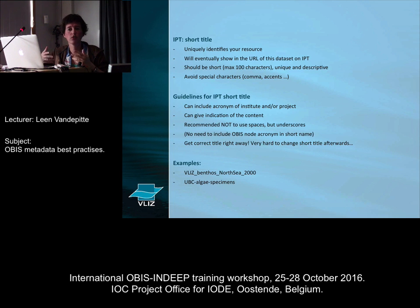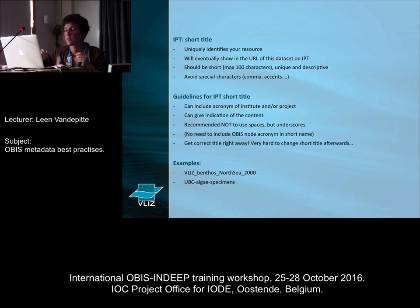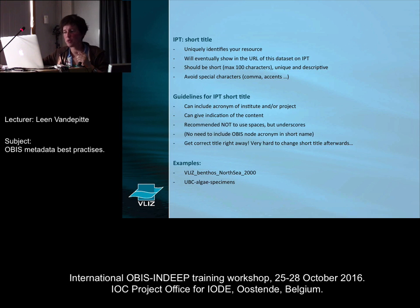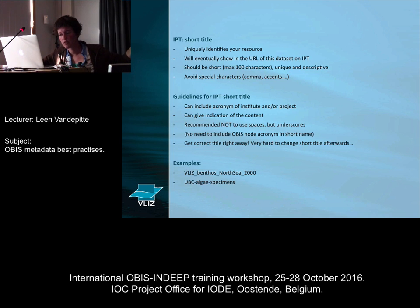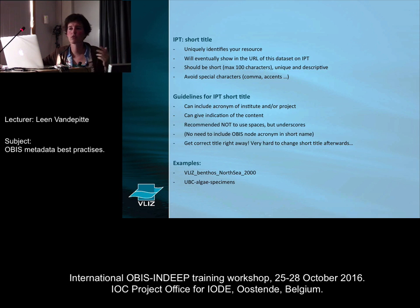If we turn that into some guidelines for the short title: if it's an acronym of an institute or project, you can include that. You can give very brief indications of the content — if it's about meiofauna, benthos, or plankton, use those words. Database-wise, it's recommended not to use spaces but to use underscores to attach words. Very importantly, think about your title before you submit it, because once submitted as the short title, it's very hard to change afterwards. For example: the first dataset title tells you it's from Institute Vliz, about benthos in the North Sea in 2000; the second tells you it's from UBC and concerns data on algal specimens.